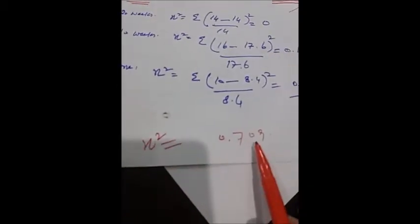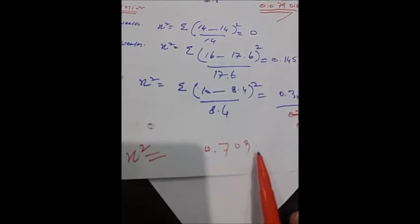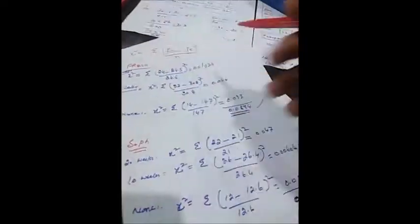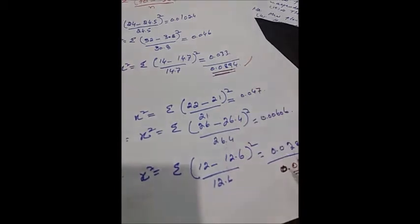This chi-square final grand total of 0.709 is obtained from the subtotals of Junior, Senior, Freshmen, and Sophomore categories — the addition of these values gives us the chi-square result of 0.709.